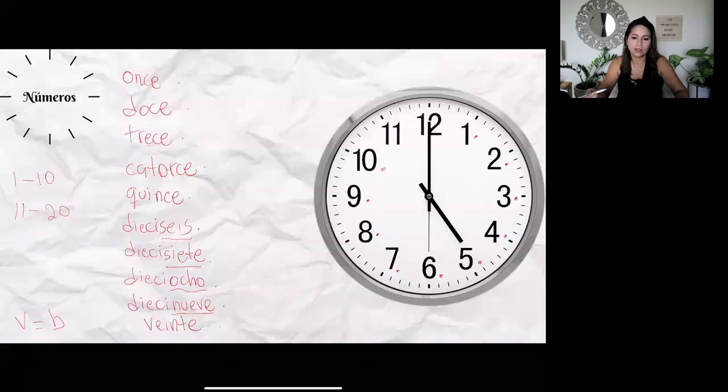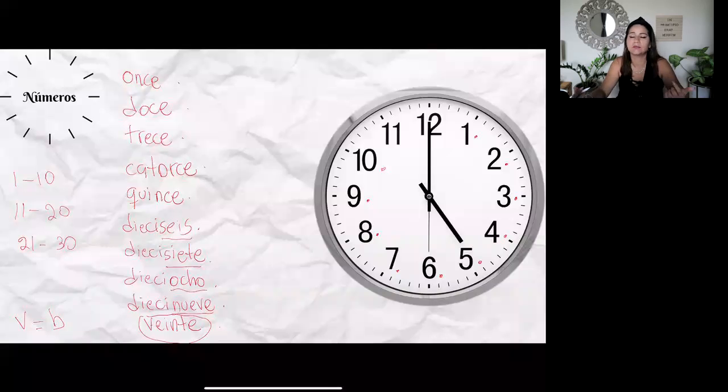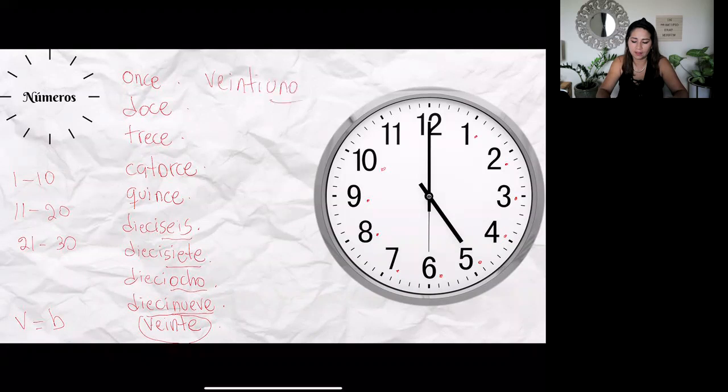before b and v have the same sound, so veinte. Okay, very good. Now let's do twenty-one to thirty. For this you basically are going to use the number twenty and add the number, so veintiuno, and then the same pattern with the rest of the numbers. Veintidós, veintitrés, veinticuatro, veinticinco, veintiséis, veintisiete, veintiocho, veintinueve, and for thirty